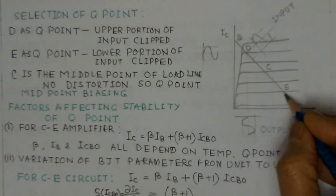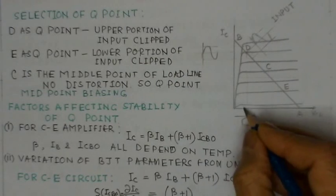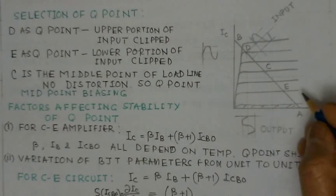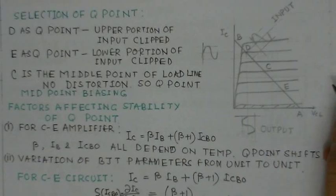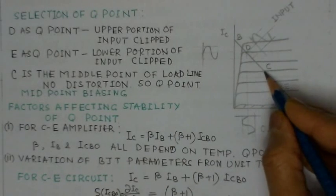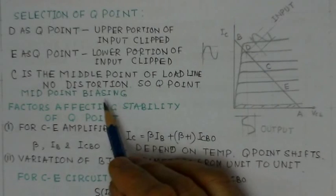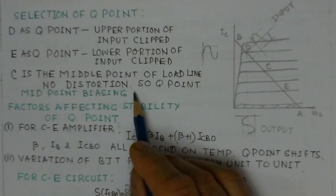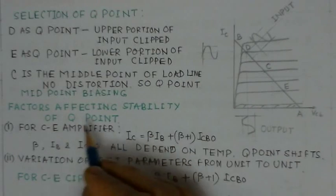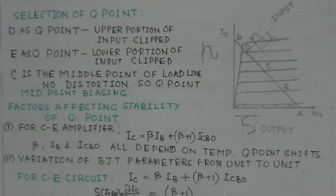When the Q point is near the cutoff region, the negative cycle of the input would be clipped off. The best operating point is therefore the center of the load line — the midpoint. Selecting the middle point on the load line gives maximum output without distortion. This is called midpoint biasing of the transistor.